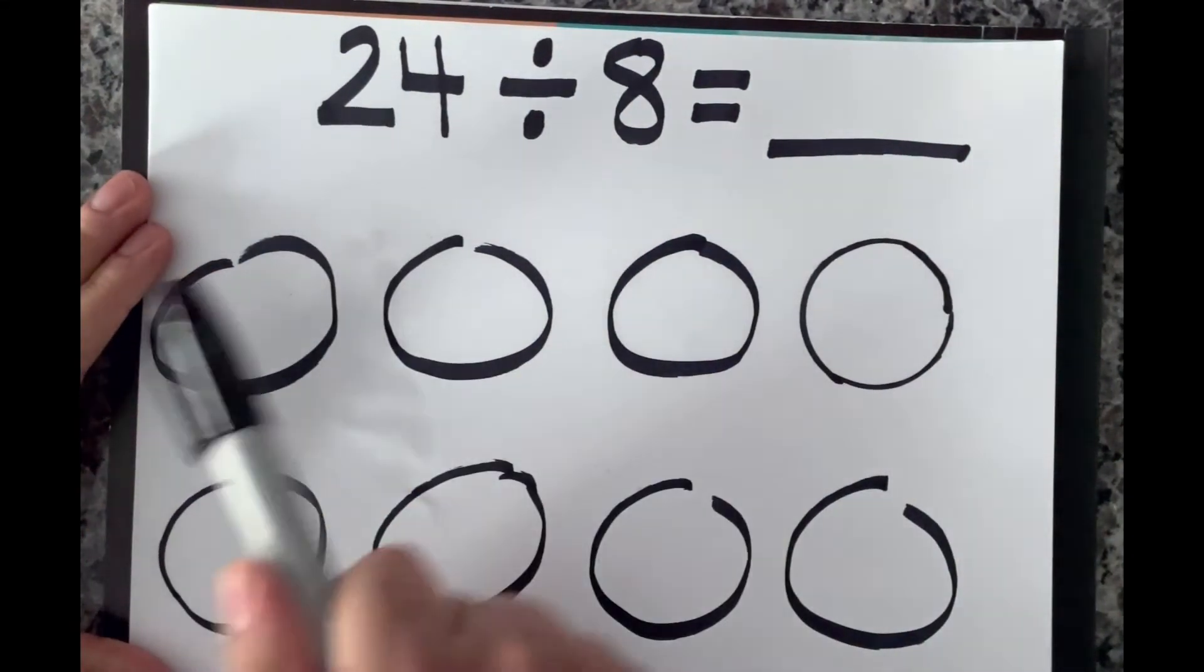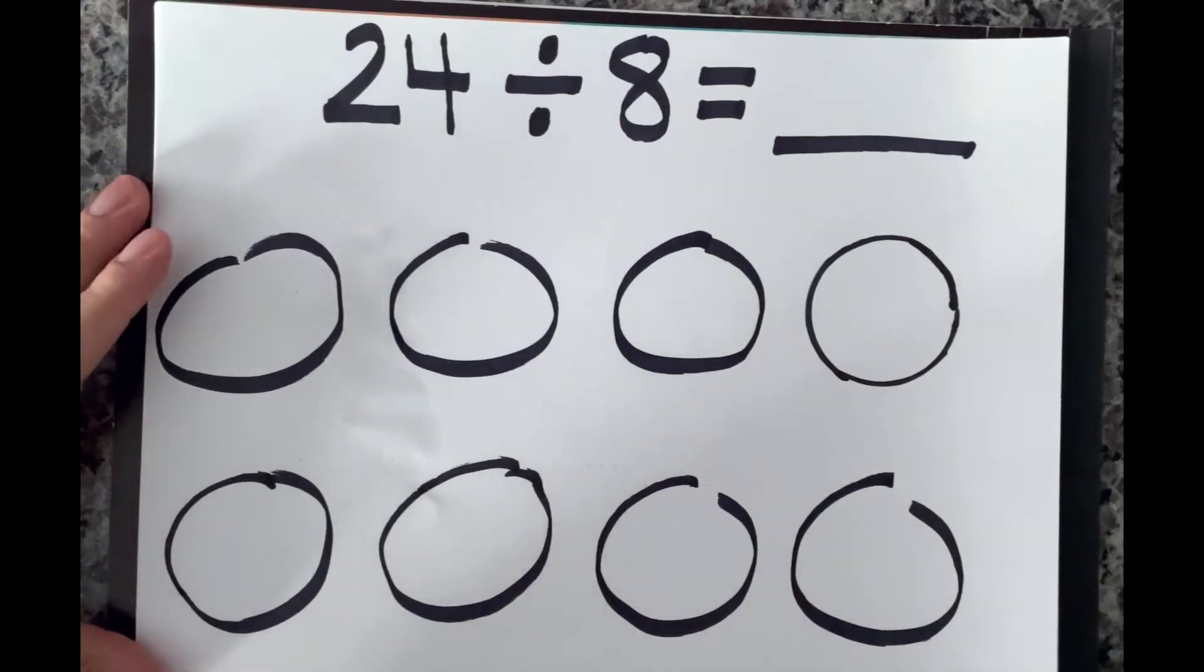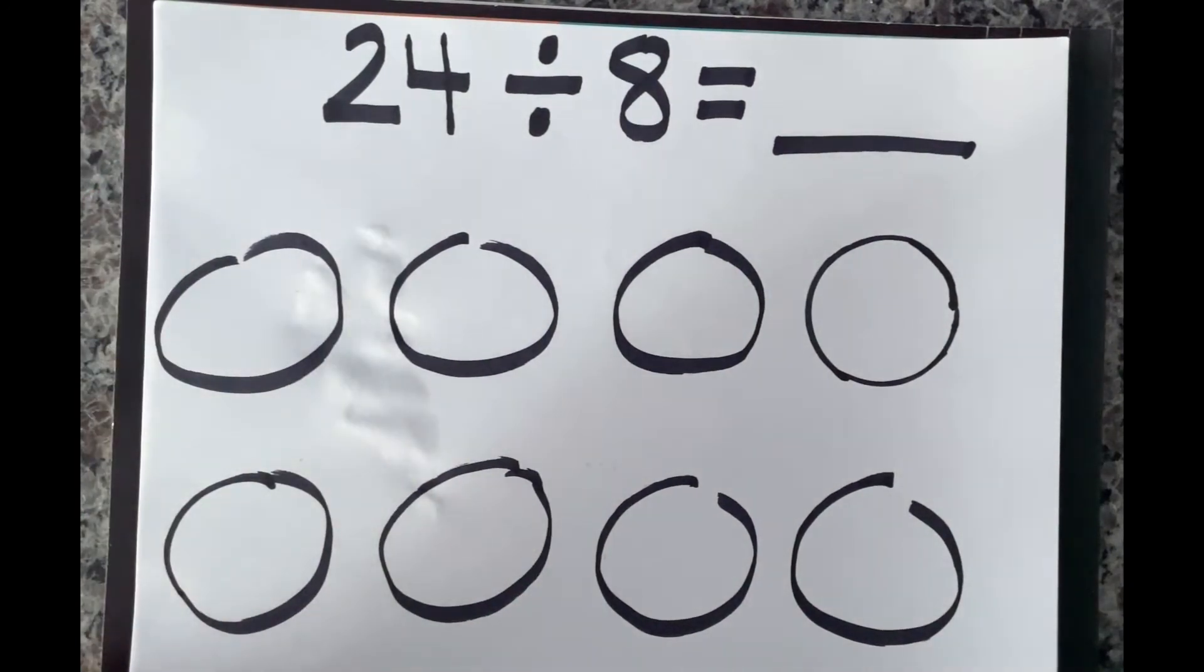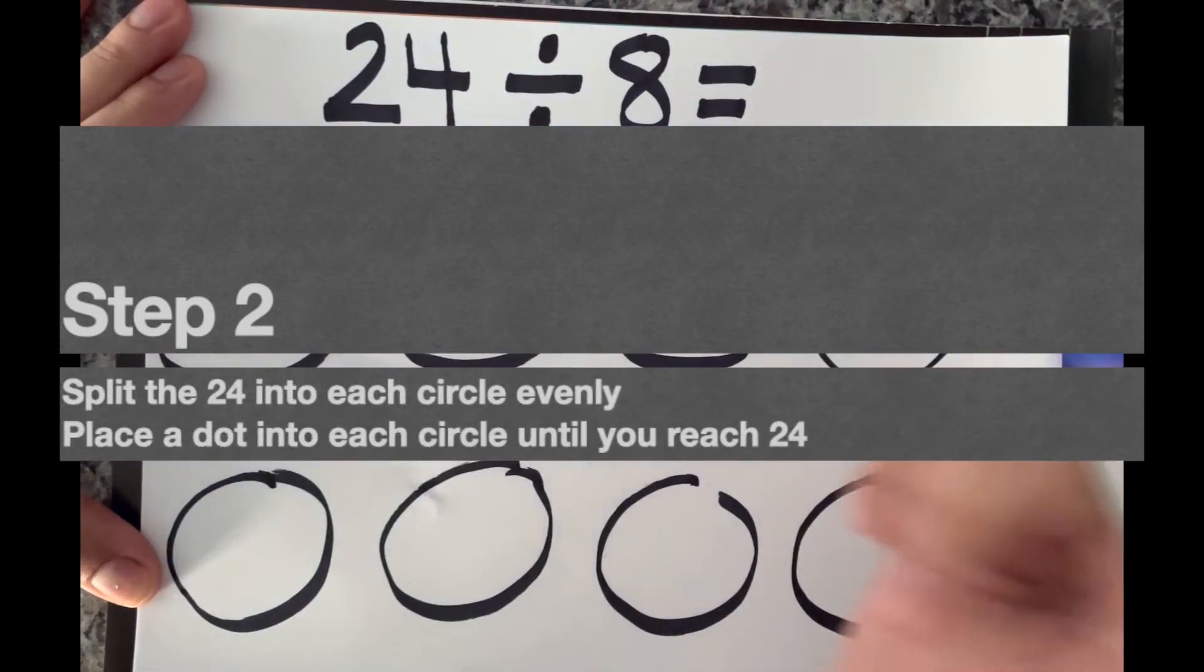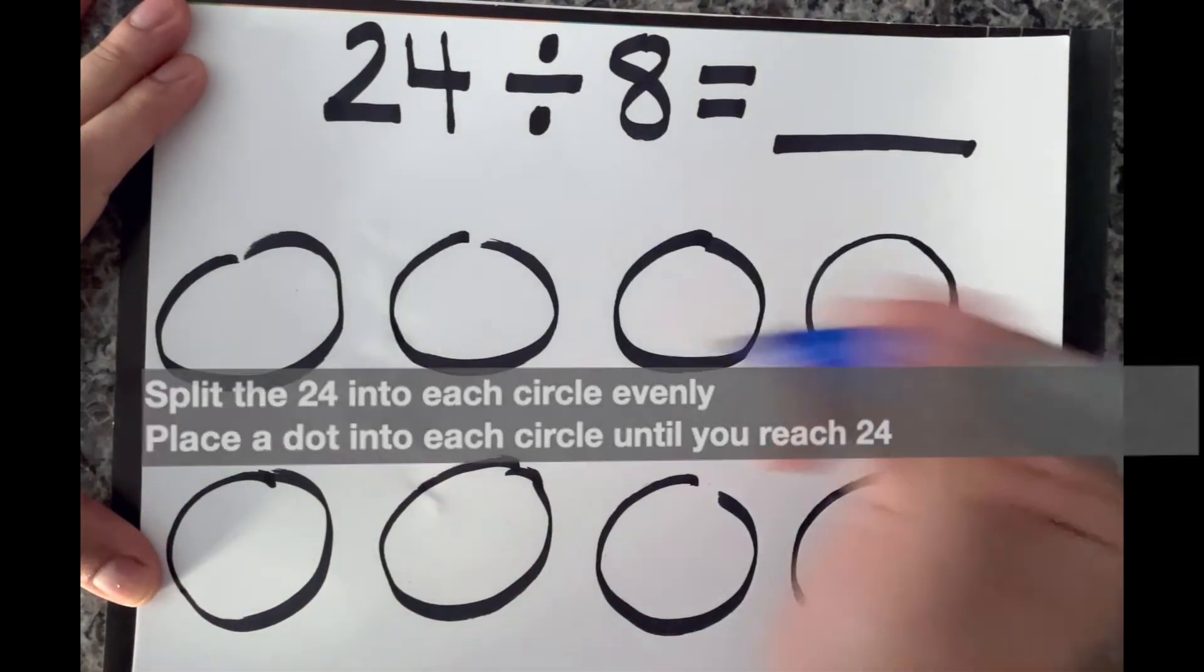Okay, so now we know that we need to split up the 24 bucks into each one. So in order to represent that, let's go ahead and just draw, let's put a dot in each box until we get the number 24.